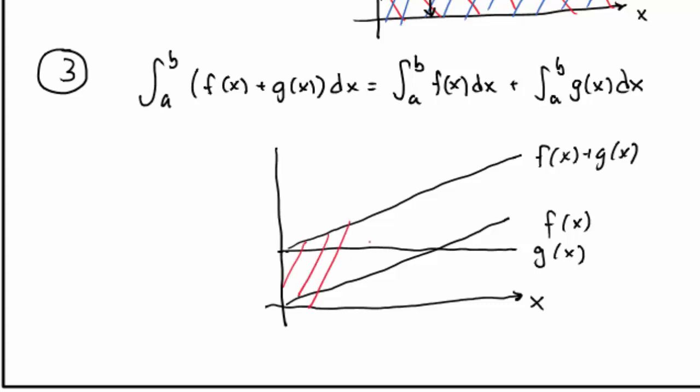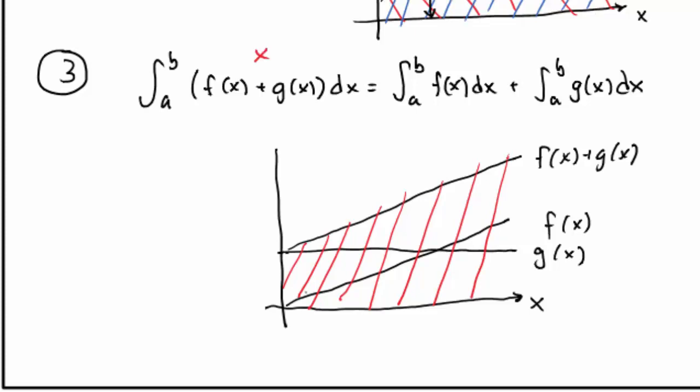The left-hand integral is represented by this red area, the graph under the sum of these two functions. The first integral on the right-hand side is represented by this blue area, the area under f of x, and the second integral on the right-hand side is represented by this green area. Hopefully you can see that the sum of the blue and the green area must be precisely the red area,